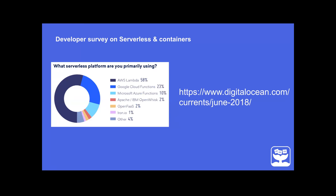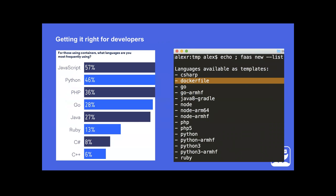One of the things the survey asked is what languages are being used with containers most frequently, and that list looked very familiar because it's almost one-for-one the list of languages we're supporting right now - with a small caveat around PHP, which is supported in the community, and Java, which I'm about to show you. I think we're getting things right by focusing on developers first.